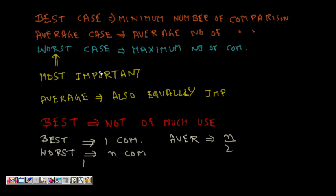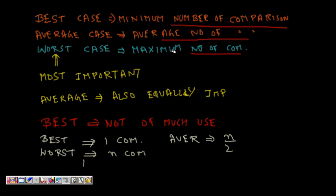To summarize: the best case is the minimum number of comparisons needed; the average case requires around n/2 comparisons for searching among n numbers; and the worst case is the maximum number of comparisons. The worst case is most important because it gives us an upper bound on the performance of our algorithm — even when the input is very bad, we know it will not exceed that bound.